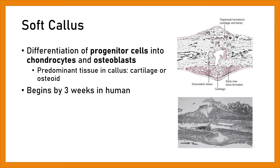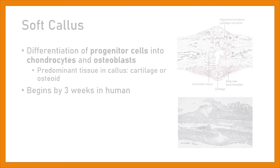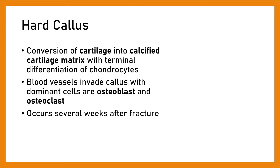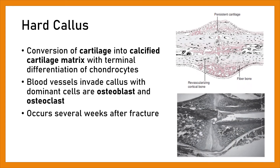Soft callus: Differentiation of progenitor cells into chondrocytes or osteoblasts; predominant tissue in callus is cartilage or osteoid. Begins by 3 weeks in humans. Hard callus: Conversion of cartilage into calcified cartilage matrix with terminal differentiation of chondrocytes. Blood vessels invade the callus, with dominant cells being osteoblasts and osteoclasts. Occurs several weeks after fracture.